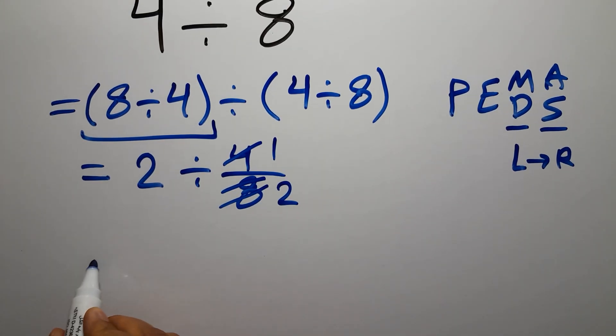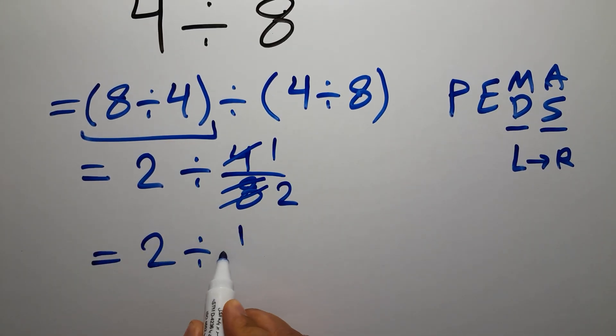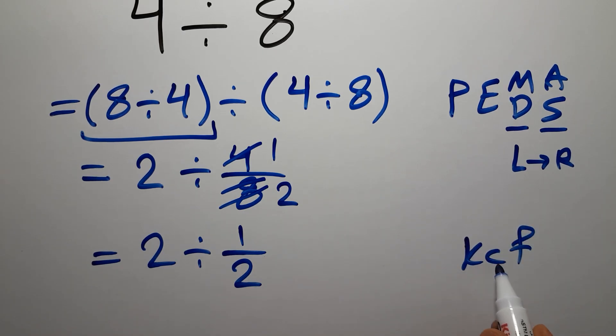Now, according to the KCF rule, K stands for keep, C stands for change, and F stands for flip.